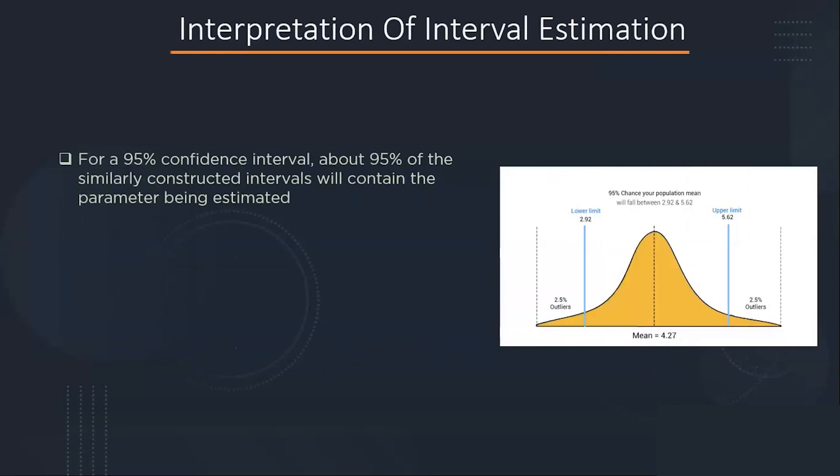A 95 percent confidence interval of the mean is a range with an upper and lower number calculated from a sample. Because the true population mean is unknown, this range describes possible values that a mean could be. If multiple samples are drawn from the same population and a 95 percent CI calculated for each sample, we would expect the population mean to be found within 95 percent of these confidence intervals.